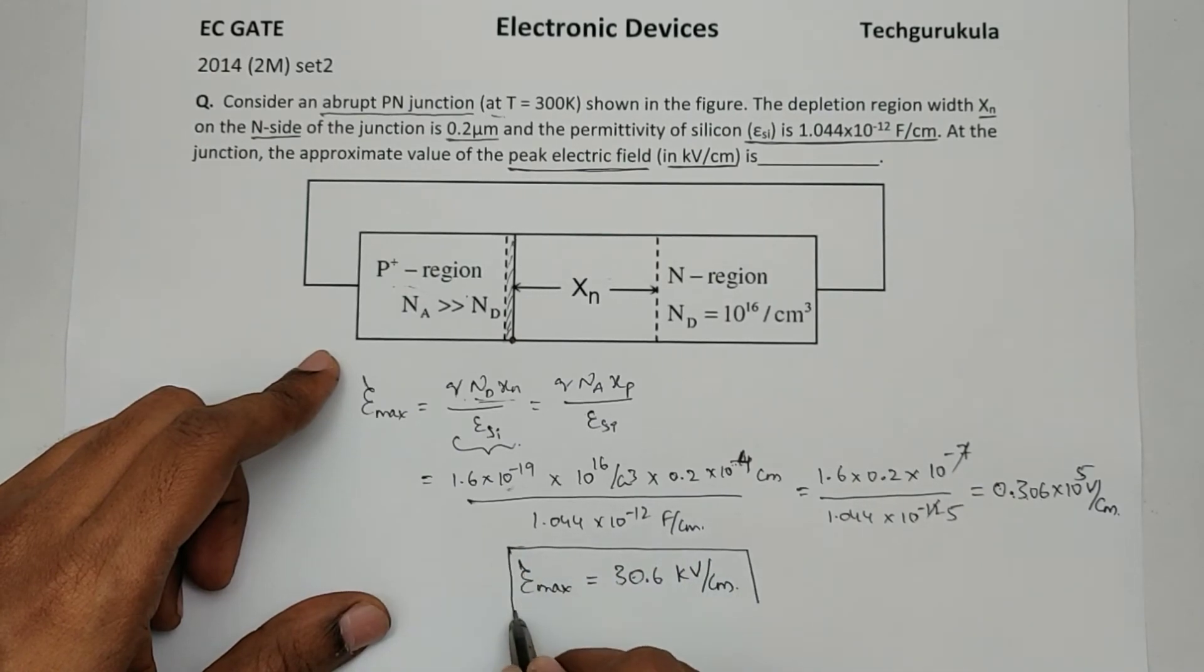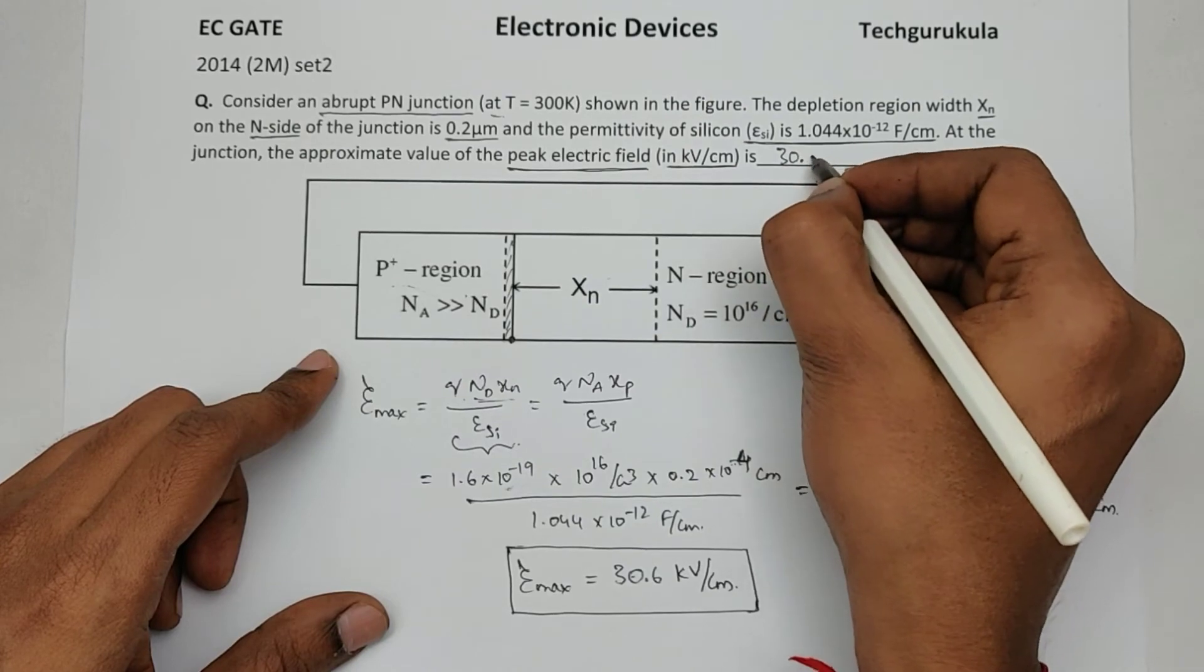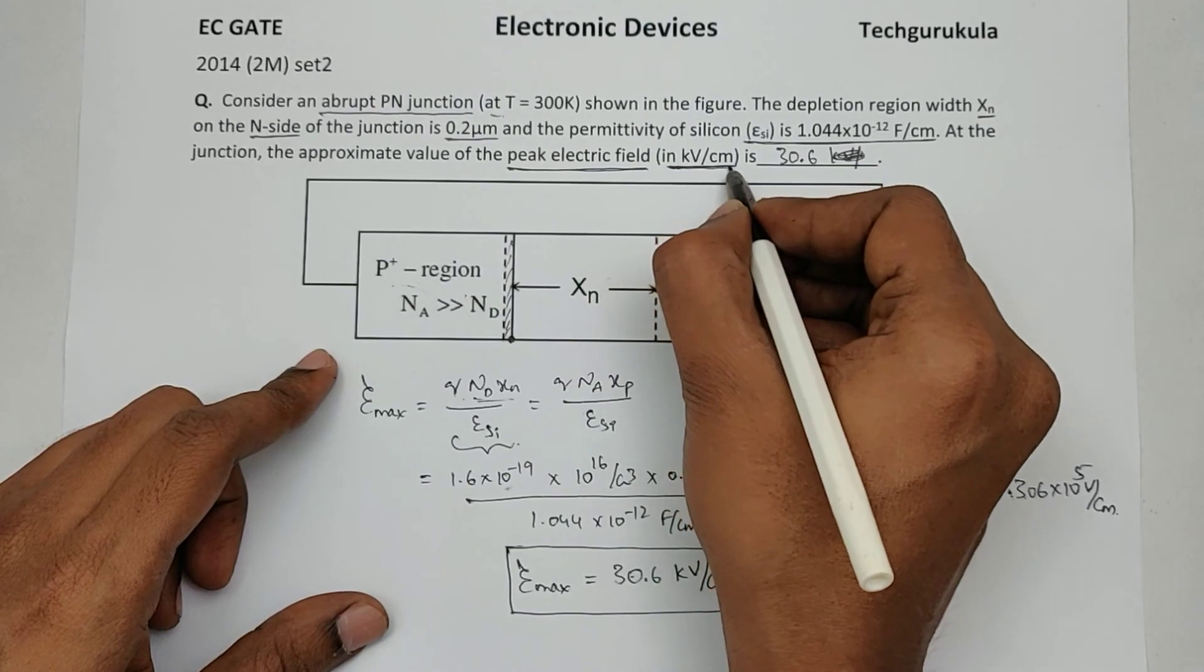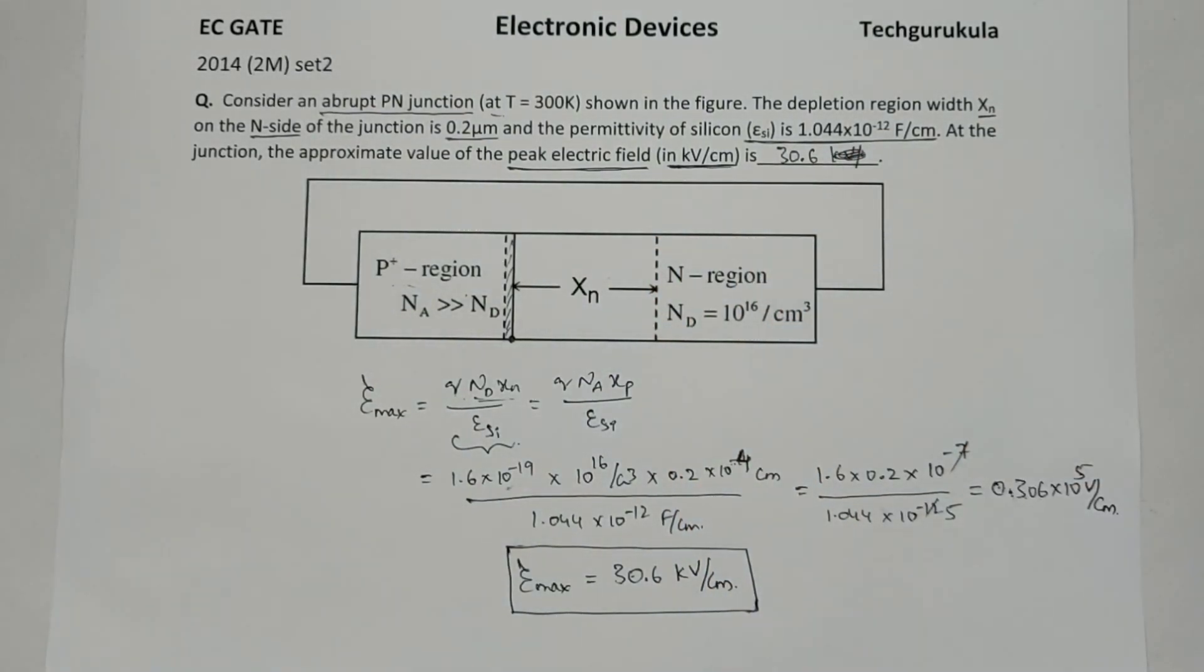Okay, this is E_max. So let's put this here, 30.6 kilovolt, sorry, we don't have to, it's already given as kilovolts per centimeter. 30.6 is the answer.